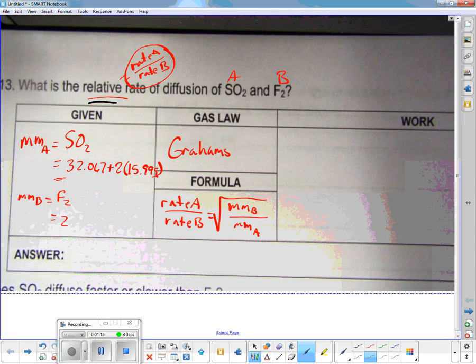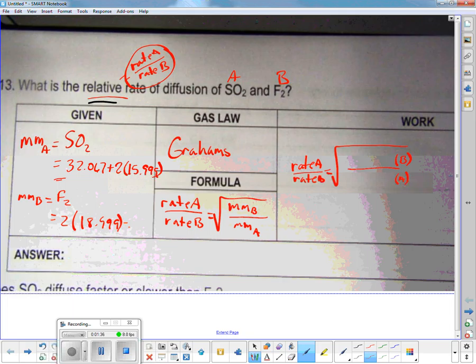So molecular mass of A is SO2, that's 32.067 plus 2 oxygens. Mass B is F2, if you need a calculator there are some over there by the flag, that's 2 times 18.999. Then you put those numbers into the formula with B on top and A on the bottom. Don't forget to do the square root. Make sure you put parentheses around it.